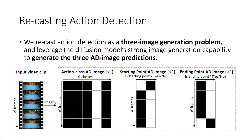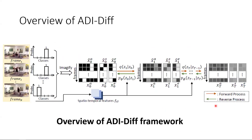We can leverage the diffusion model's strong image generation capability to generate the three AD image predictions. Here, we visualize the three AD images. For all three AD images, each row represents the prediction at a particular frame. For the action class AD image, the columns represent the different action classes, and for the starting point AD image, they have two columns representing the probabilities that the frame is or is not a starting point — similarly for the ending point AD image. Using this formulation of AD images, we propose our ADIDIF framework, which stands for Action Detection Image Diffusion Framework.